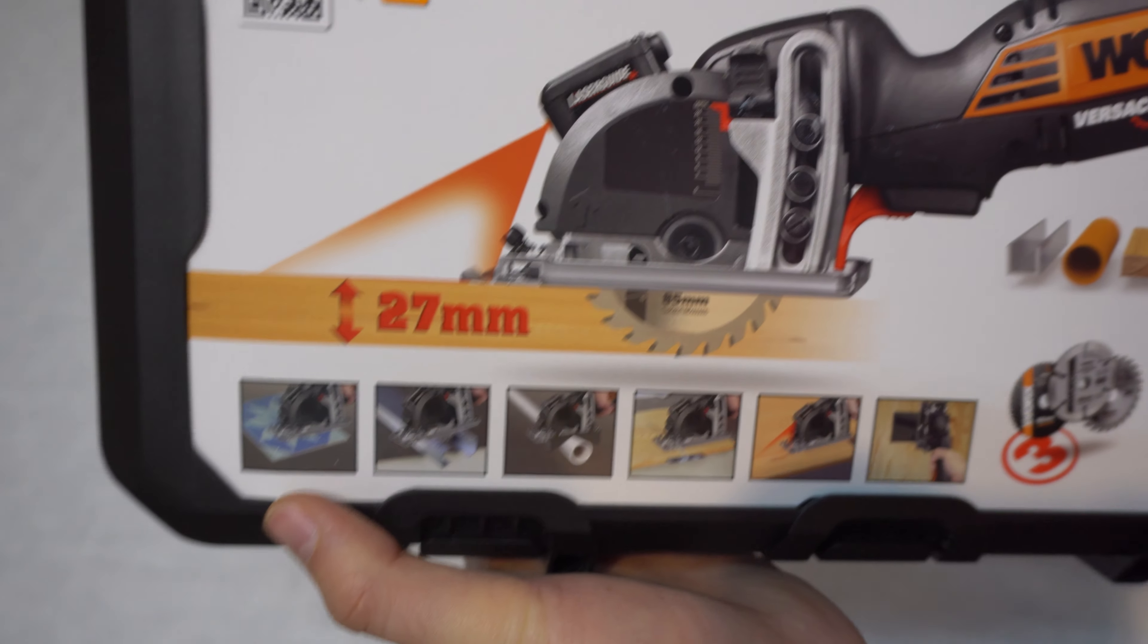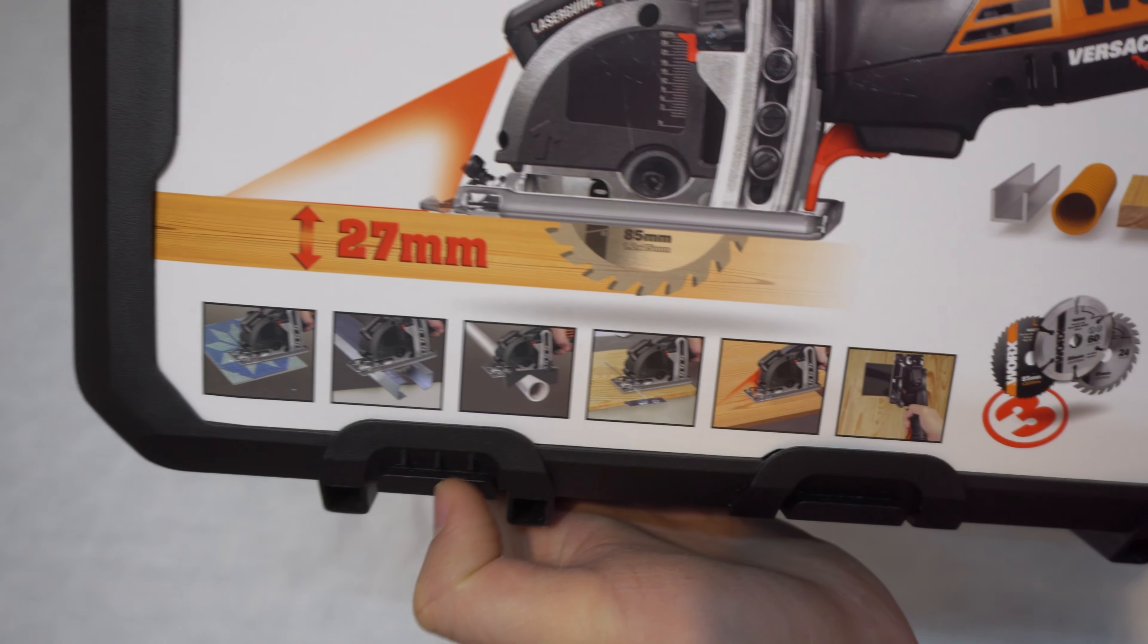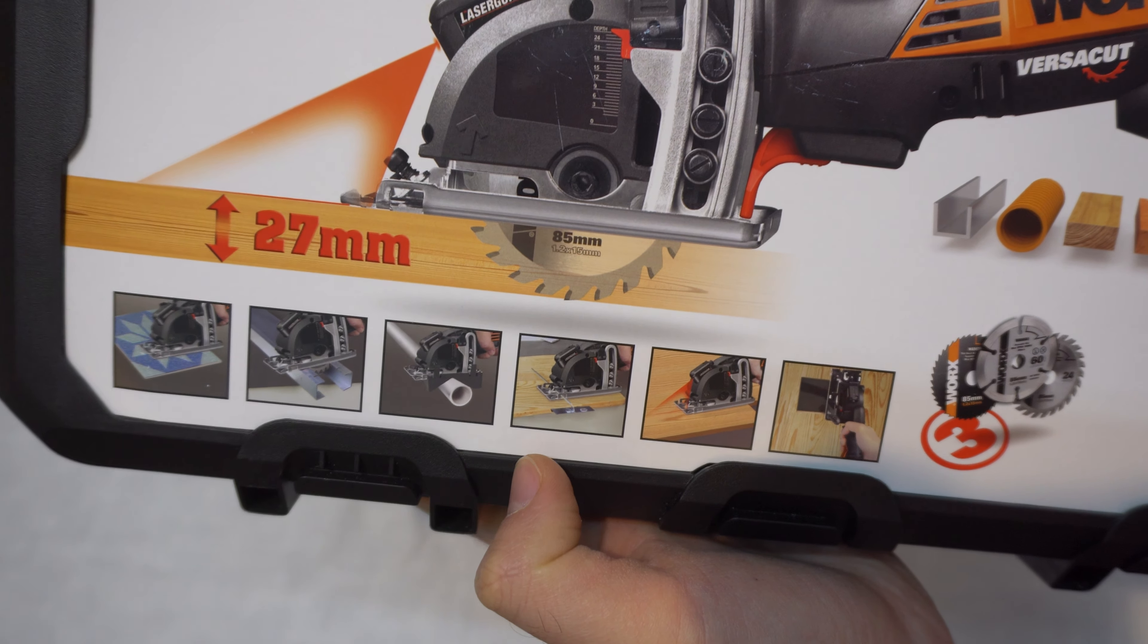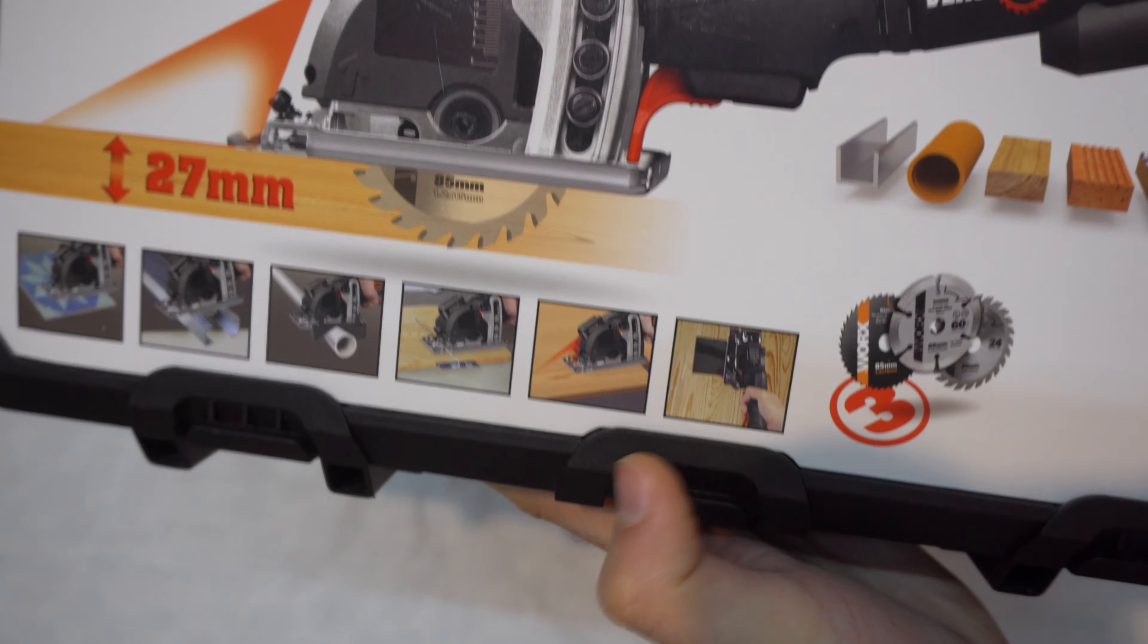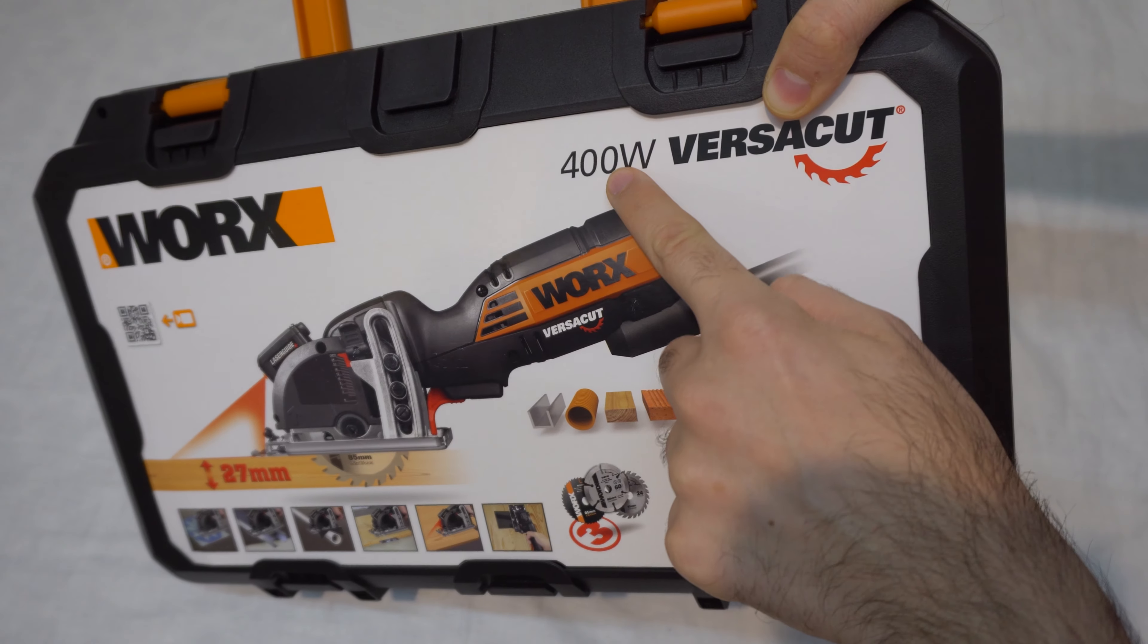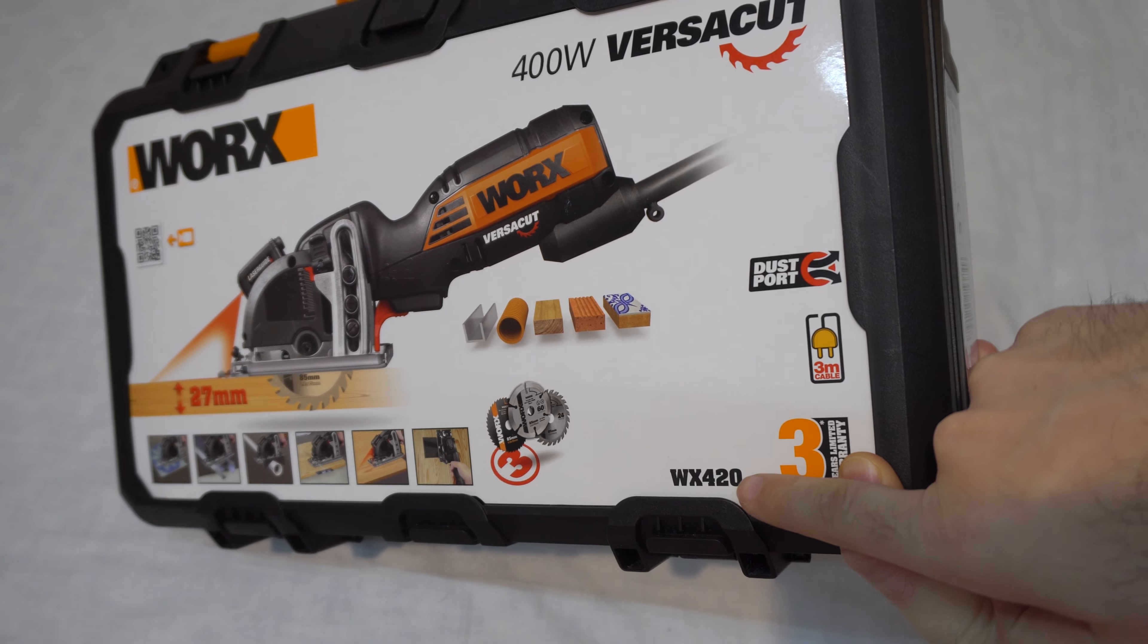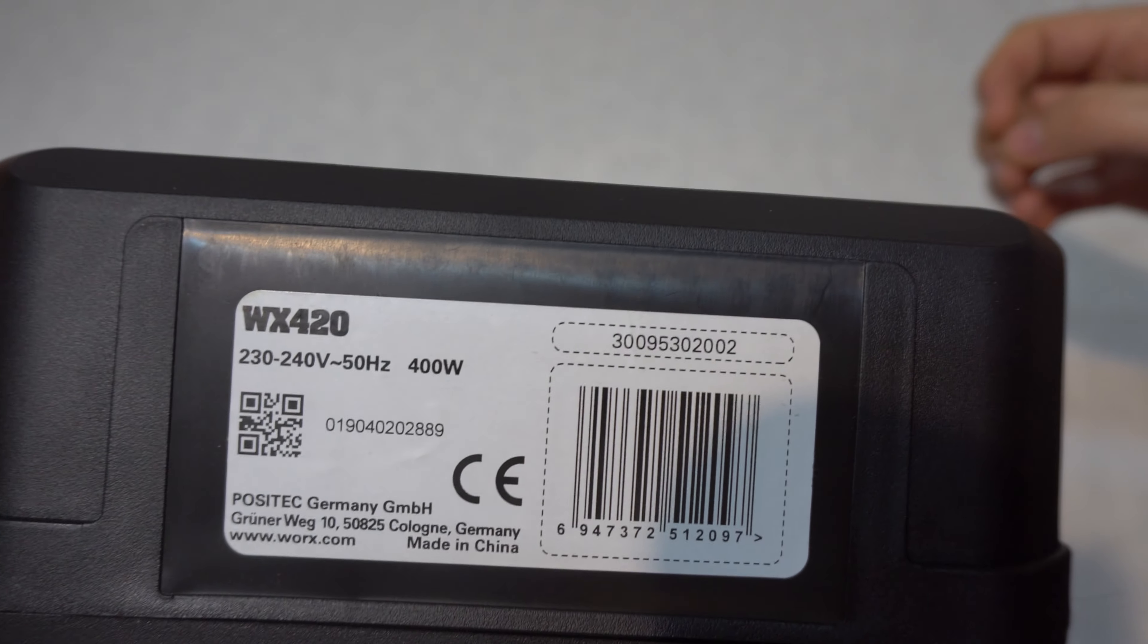The different surfaces: ceramics, metal. It has a v-shaped adapter for cutting pipes. It has a distance keeper for cutting wood. It has the laser here in the front, and you can make holes, so-called plunge cuts. 400 watts is the power. Worx VersaCut WX420, designed in Germany and made in China.